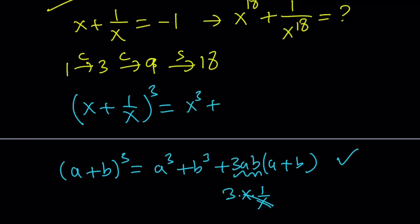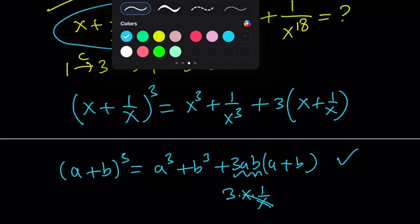So anyways, this becomes x cubed plus 1 over x cubed plus 3ab, which is 3, times a plus b, which is x plus 1 over x. Now, this is nice because we do know x plus 1 over x is negative 1. So we can go ahead and plug it in. Let's do it.